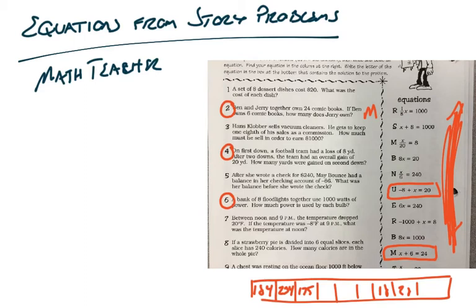A bank of eight floodlights. So bank means basically a row of eight lights. Together use 1,000 watts of power. How much power is used by each bulb? So we've got eight floodlights. We know that they're going to use 1,000 watts. That's the amount of power that those lights are using.